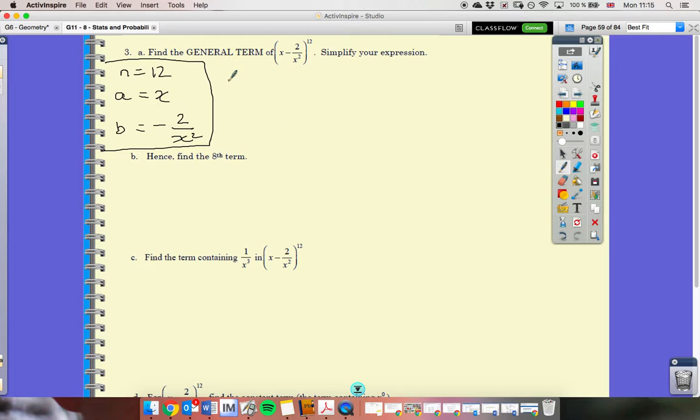To get our general term, we're using the actual formula for the binomial expansion. That general term is in the formula. It's the third term that you'll find in the formula. So, it's going to be n choose r, so we've got 12 choose r, a to the power of n minus r, so we make that 12 minus r, and b, which is this, to the power of r.